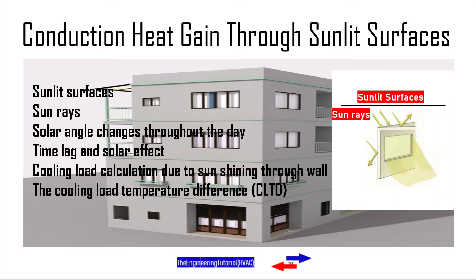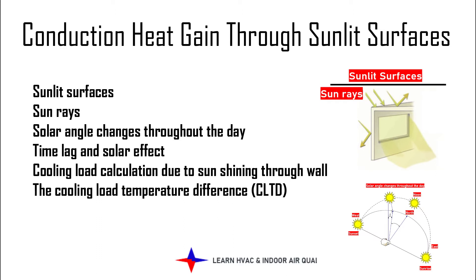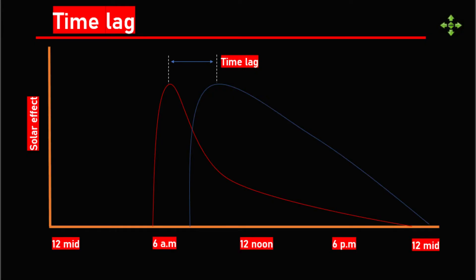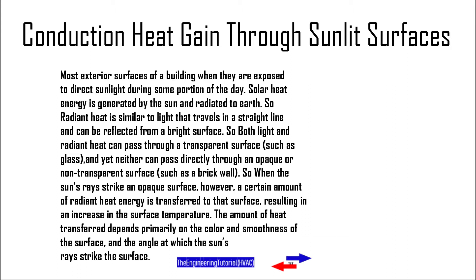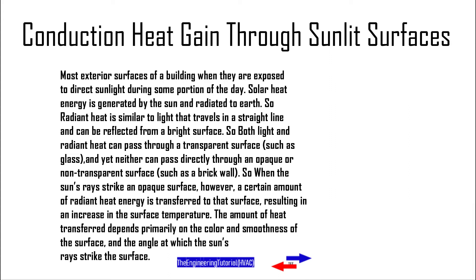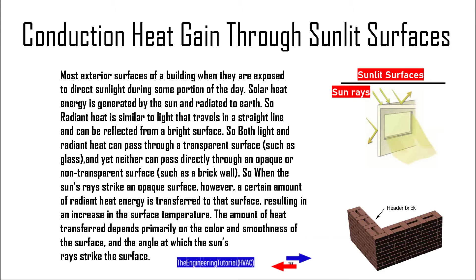We need to know first about sunlit surfaces, sun rays, solar angle changes throughout the day, and time lag and solar effect. The foremost exterior surfaces of a building are exposed to direct sunlight during some portion of the day. Solar heat energy is generated by the sun and radiated to earth. Radiant heat is similar to light — it travels in a straight line and can be reflected from a bright surface. Both light and radiant heat can pass through a transparent surface such as glass, yet neither can pass directly through an opaque or non-transparent surface such as a brick wall.